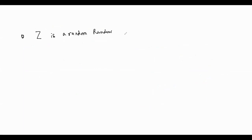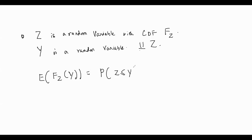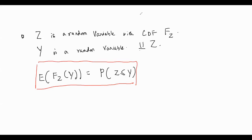Let's state and prove the general result. If Z is a random variable with CDF F_Z, and Y is another independent random variable, then E[F_Z(Y)] = P(Z ≤ Y). This is a beautiful result — the expected value of the CDF evaluated at a random variable equals the probability that Z is at most Y. The proof uses the law of total probability and is quite elegant.